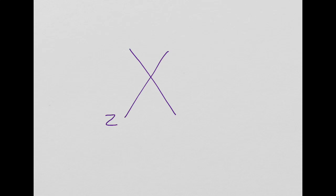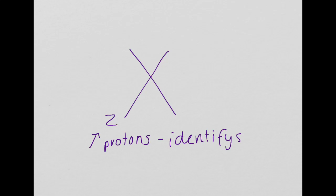First, we need to be able to recall the meaning of mass number and atomic proton number. If we represent an element by X, the proton number Z always goes on the bottom. This is basically the number of protons, and we need to remember that the number of protons identifies the element, and that all atoms of the same element will have the same number of protons.